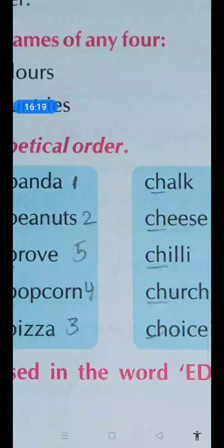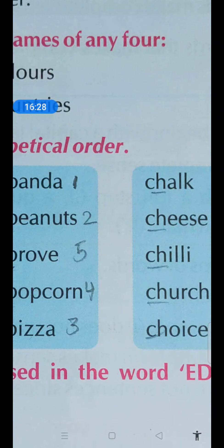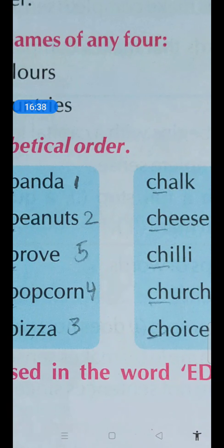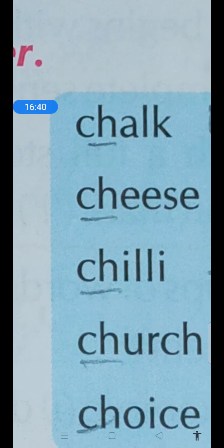Then obviously smart kids you can think about this. What we have to do children? If the first letter is same and even if the second letter is also same, obviously we will just move to the third letter and we will follow the alphabetical order over there. We have to move to third letter and arrange alphabetically. All are C-H, so we are not going to focus anymore on C-H.